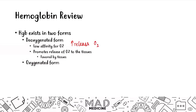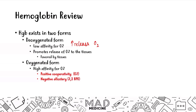Then you have the oxygenated form. This form has a high affinity for O2 due to positive cooperativity and negative allostery of these two molecules, which just means that once you have, let's say, two heme molecules saturated with oxygen, the third and fourth heme molecule will get saturated much faster. So the more you have, the more likely you are going to become completely saturated — and the more likely you're going to let go of oxygen. The oxygenated form is going to promote the uptake of oxygen from the lungs, so it is going to be favored by the lungs.